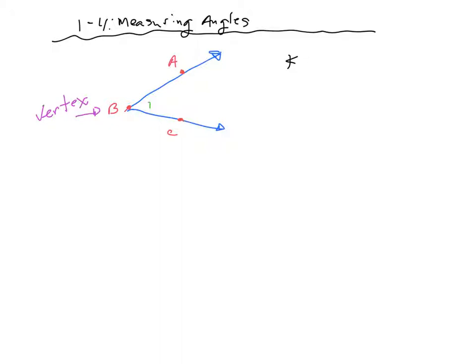So we can name it angle ABC, or we can go backwards and name it angle CBA. The only stipulation is the vertex has to be in the center. And only if they put a number in there could you name this angle 1. Those are your three ways to name that angle — no other choices. So I'm going to give you a picture that has two angles, and I want you to name both angles all three ways.